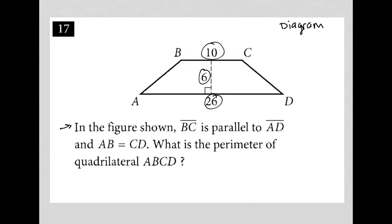The question says, in the figure shown, BC is parallel to AD. Okay, so I'll make my marks for that. And AB equals CD. So that's good to know. That means we have actually an isosceles trapezoid. So just write that down here.